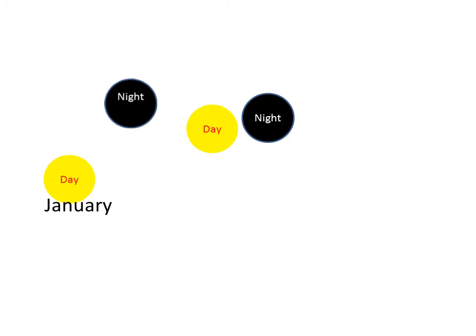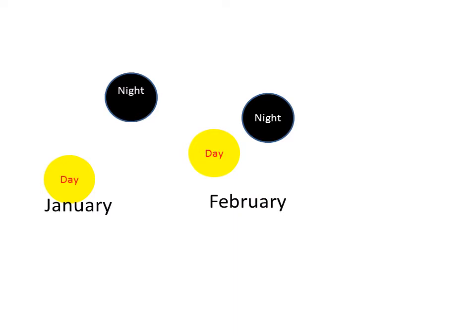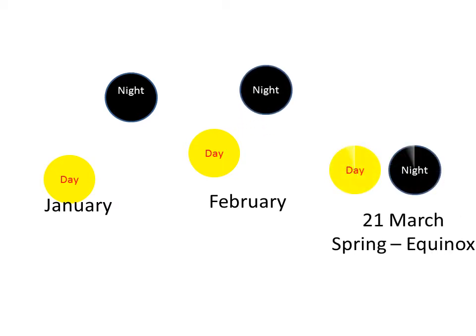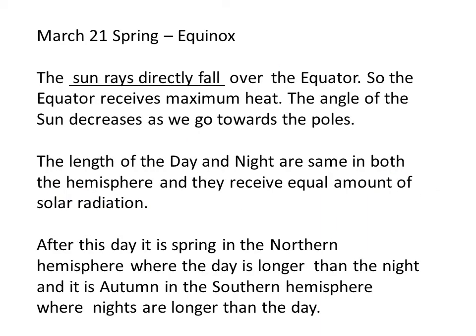Let us take the example of January. In January, we have shorter days and longer nights — say, a day is of 10 hours and night of 14 hours. As we move towards February, there is less difference between days and nights. And by the time we reach March, there comes a day when day and night are equal. It happens on March 21st. It is called spring equinox, where the length of the day and night are the same in both hemispheres, meaning they receive equal amounts of solar radiation. Equinox means 'equi' meaning equal and 'nox' meaning night.